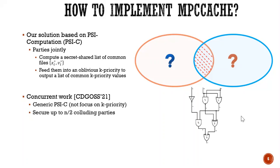Here is, in this case, oblivious K priority and output a list of common K priority values. So concurrent with ours is a paper from CCS last year. And their paper focuses on generic PSIC. And also their protocol is secured up to N over 2 colluding parties.